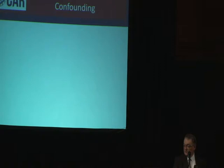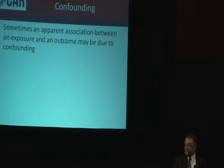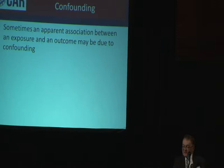That was a quick attempt to explain sampling and error. Now the other thing I have to explain is confounding. This time I think the example might work a bit better because I haven't used anything terribly technical. Sometimes — and this is really the major problem in environmental epidemiology — an apparent association between an exposure and outcome may be due to confounding.